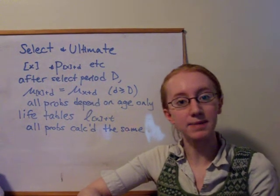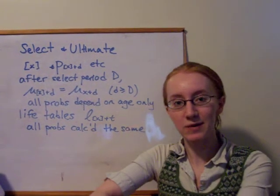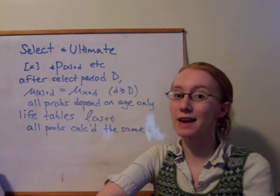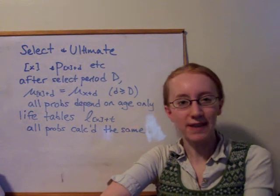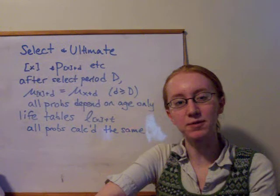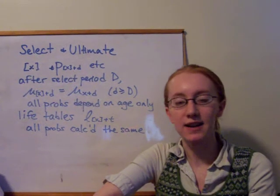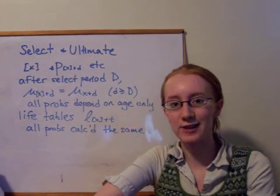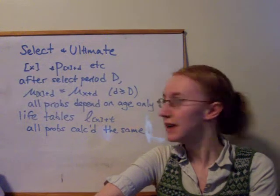We remove the square brackets because we don't care at the age at which they were selected, if we're beyond that select period. So the effect is worn off, and the mortality improvement is lost, because it's been so long that the insurance company has no assurance anymore that the person is healthier than average.